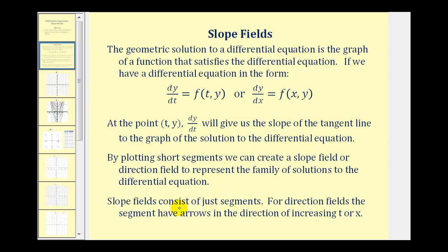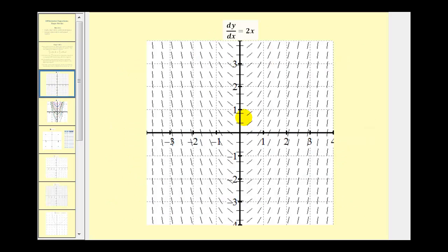Slope fields consist of just the small segments, but for direction fields the segments have arrows in the direction of increasing t or x. Let's take a look at a slope field — here we have the slope field for dy/dx equals 2x.